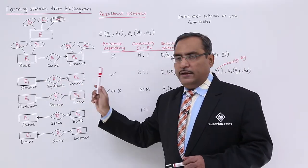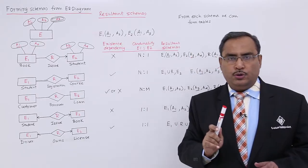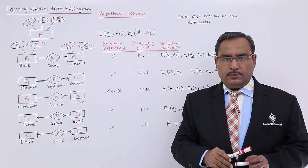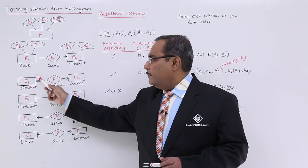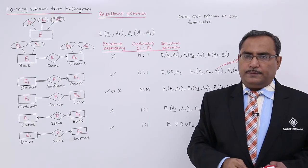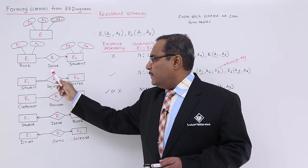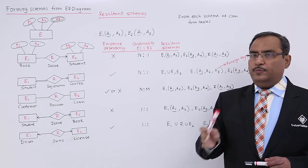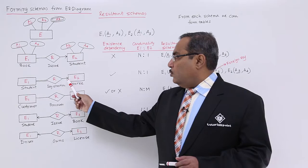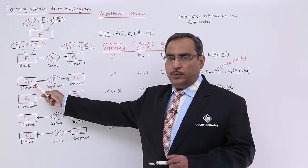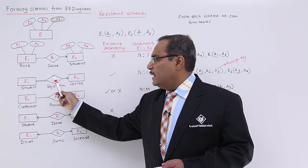Case three: we have Student, Registration relationship, and Course. A student cannot be a student at a university if they have not registered to one of the courses. So all students' roll numbers must have existence in the Registration relationship. A course can have multiple students registered, but a student can take registration for only one course at a time — so the cardinality is many-to-one, and there is existence dependency.